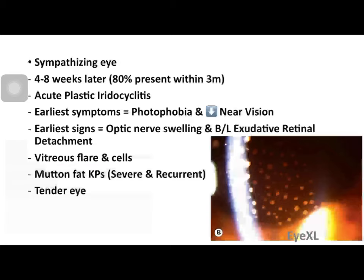The sympathizing eye shows a reaction four to eight weeks later. About 80% of cases present within three months of the stimulus — either trauma or intraocular surgery. It presents as an acute plastic iridocyclitis — a very severe anterior uveitis with grade four cells and grade three flare. The earliest symptom is photophobia and decreased near vision, because the inflamed ciliary body causes loss of accommodation.